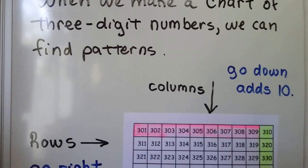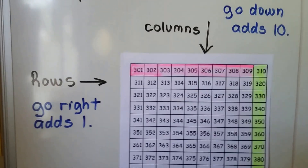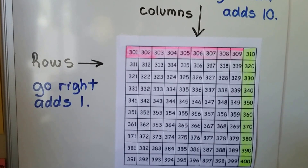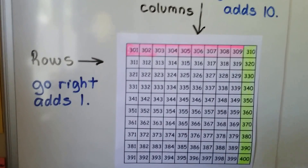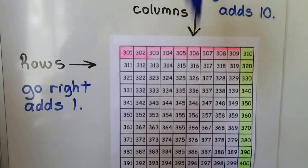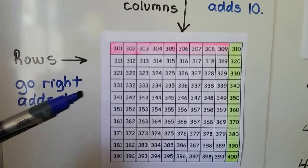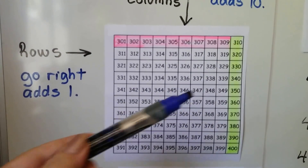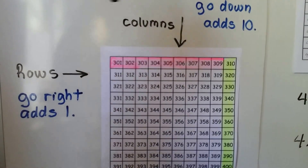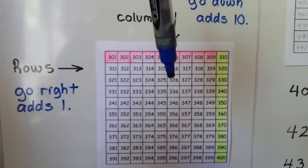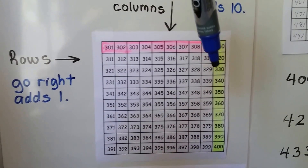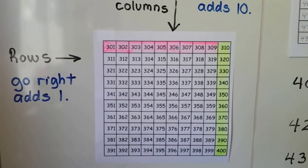When we make a chart of three-digit numbers, we can find patterns. Here's a chart of 301 to 400. The rows are going across, and the columns are going down. As the rows go to the right, they're adding 1 — each number is one larger. For the columns, as we go down, it adds 10. It doesn't matter which column we choose, it's adding 10 — it's 10 more.